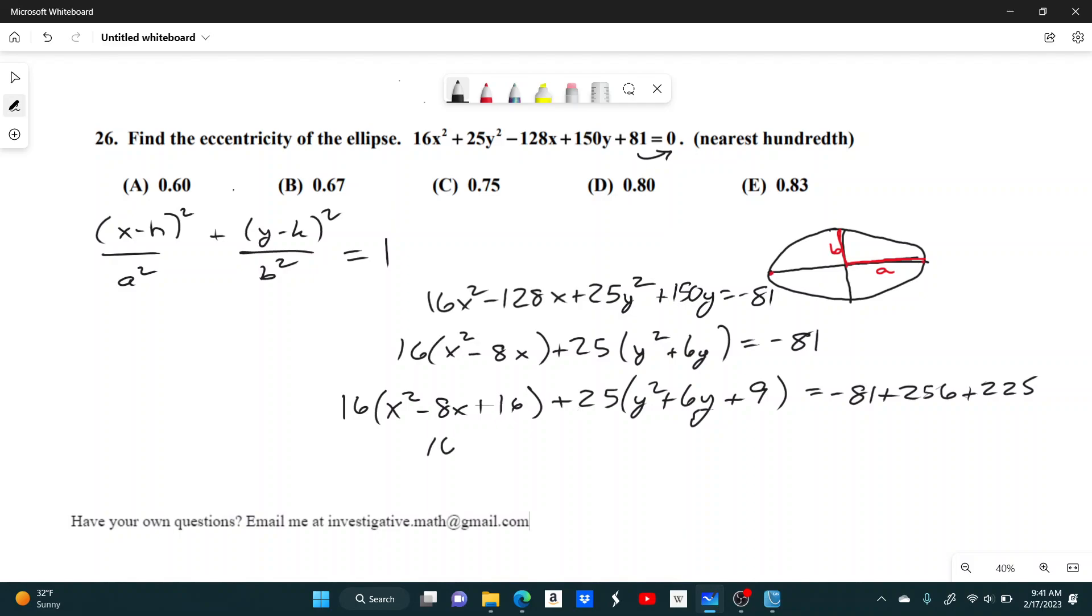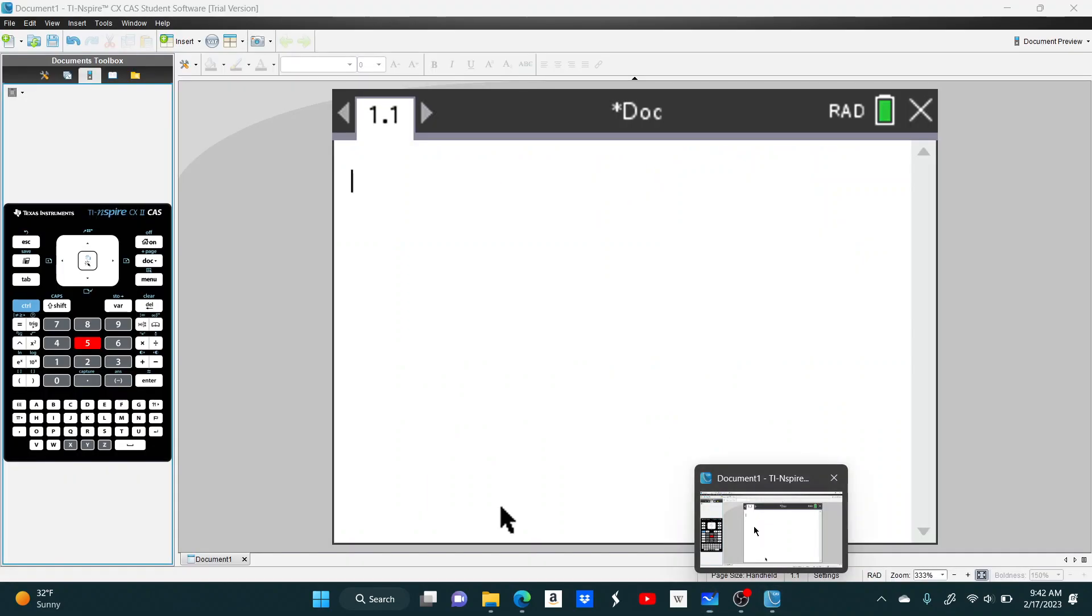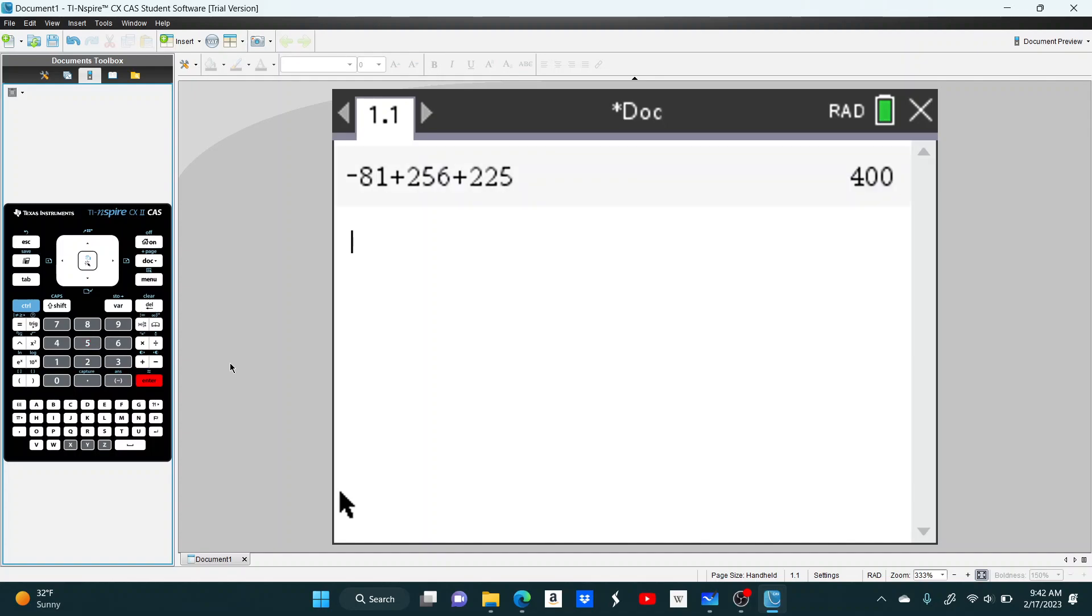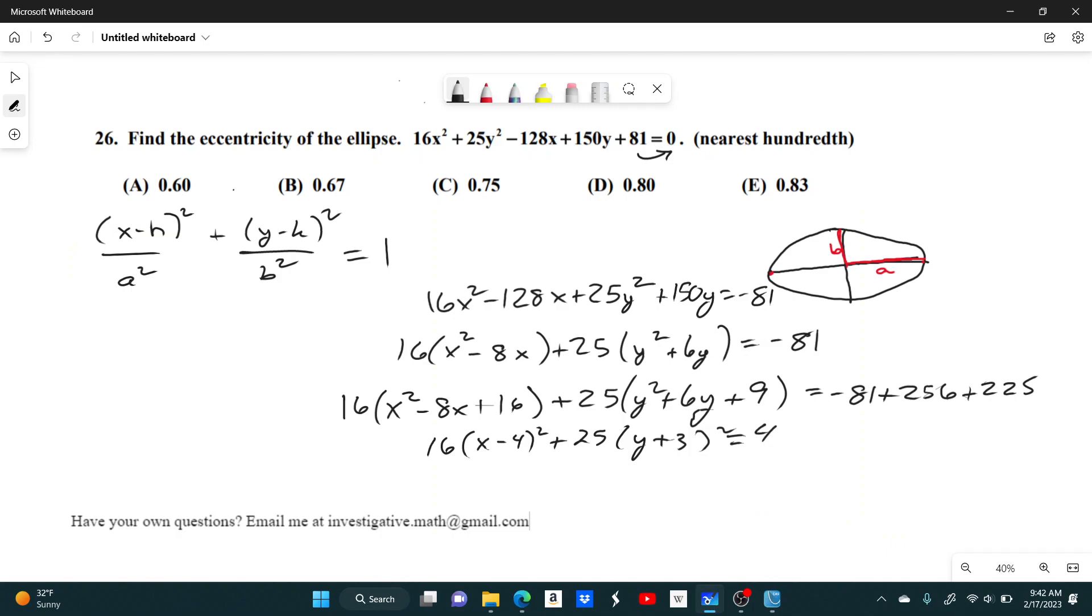So when I factor all this, you get 16 times x minus 4 squared plus 25 times y plus 3 squared equals, and give me a second, negative 81 plus 256 plus 225 gives you 400. So this equals 400 out here.